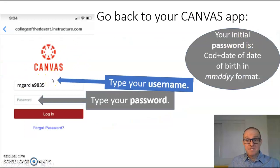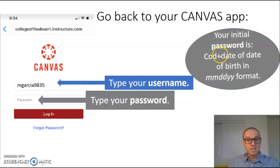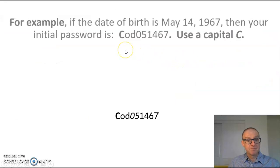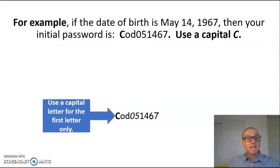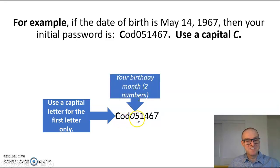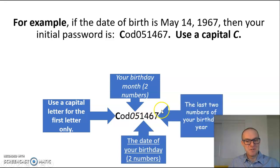Go back to the Canvas app, type your username, and then type your password. Your initial password is capital COD plus your date of birth. For example, if your date of birth is May 14, 1967, your password will look like this: use a capital C, lowercase OD, then your birthday month as two numbers — 05 in the case of May — then the date of your birth as two numbers, and the last two numbers of your birthday year.